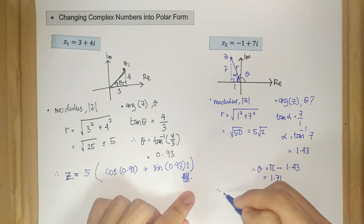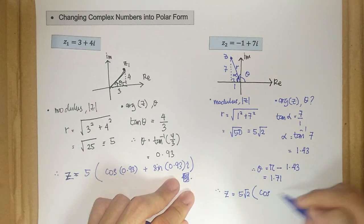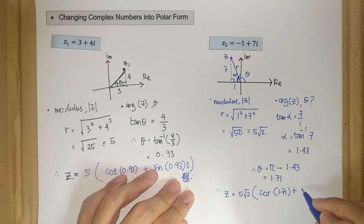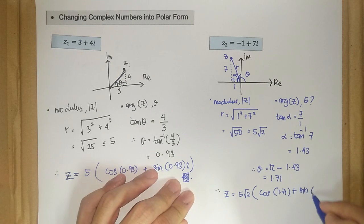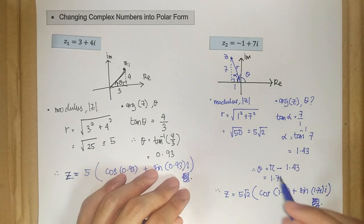Therefore, now we have our z is equal to 5 square root 2 for r, then cos 1.71 plus sin 1.71 i. So this is the answer for the second example.